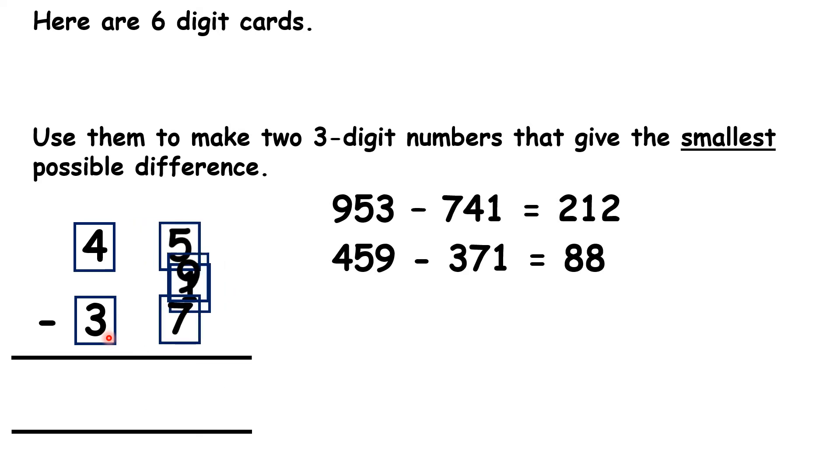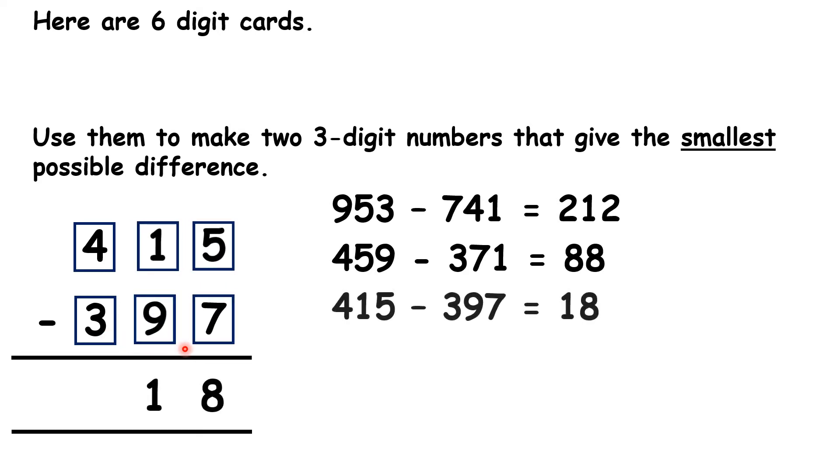So let's switch our digit cards like this. We've kept the 4 and 3 in the same place. But now we have the 1 and then the 5 in our top number, because 415 is the smallest number we can make if we leave the 4 where it is.